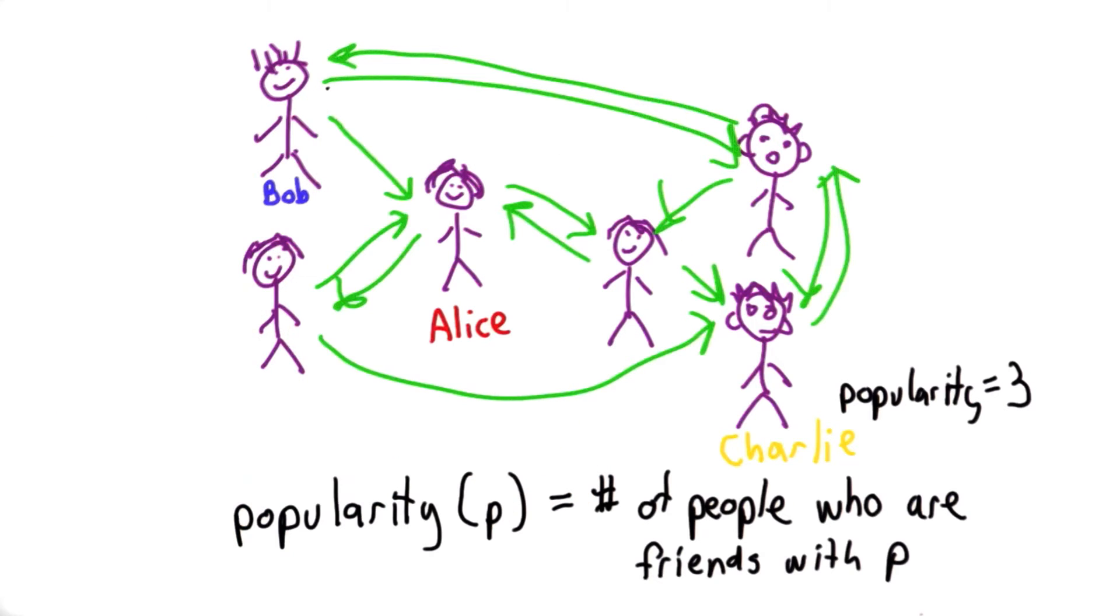Bob only has one arrow going to Bob, so his popularity score would be one. So this isn't a bad way to define popularity, but it's not quite right.